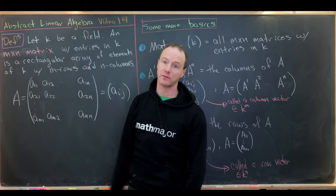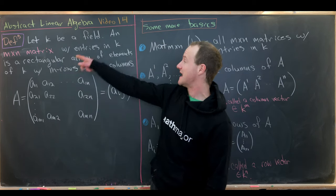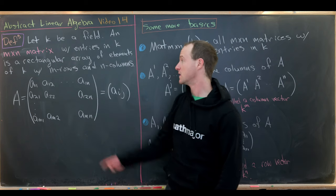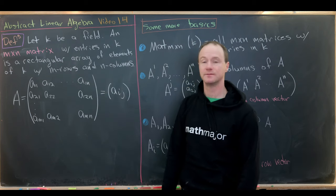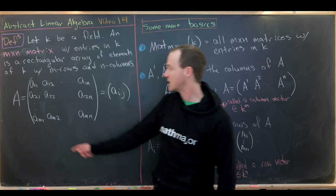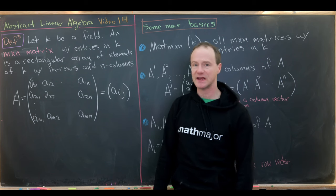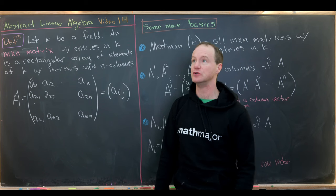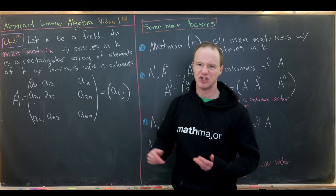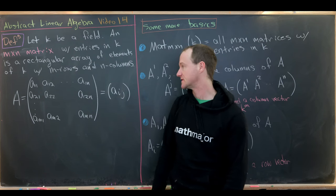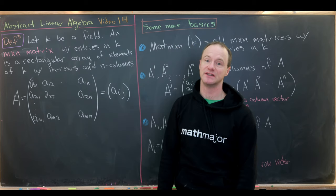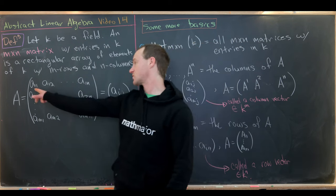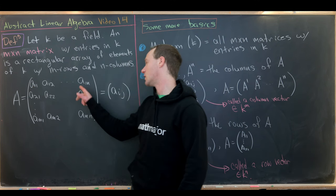Let's suppose that we've got any arbitrary field called K. An M by N matrix with entries in K is a rectangular array of elements in K with M rows and N columns. I've named my matrix capital A, and it's pretty standard to name matrices with capital letters from the beginning of the alphabet — A, B, and C are good names for matrices. The entries are double indexed: the first row contains A11, A12, all the way up to A1N.